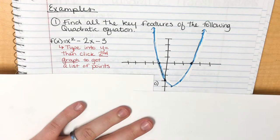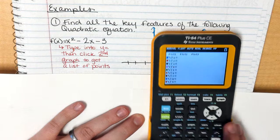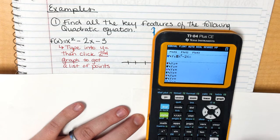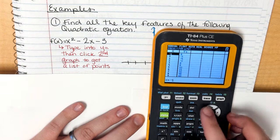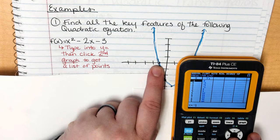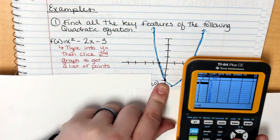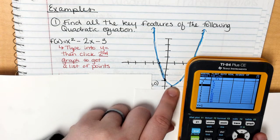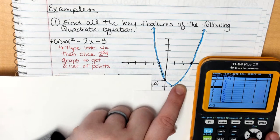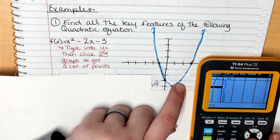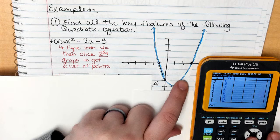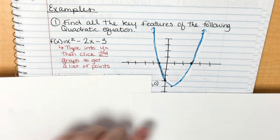Type in x squared minus 2x minus 3, then click SECOND GRAPH. It gives a list of points: (−1, 0), (0, −3), (1, −4), (2, −3), and (3, 0). Those are the points I plotted to draw the parabola on paper.